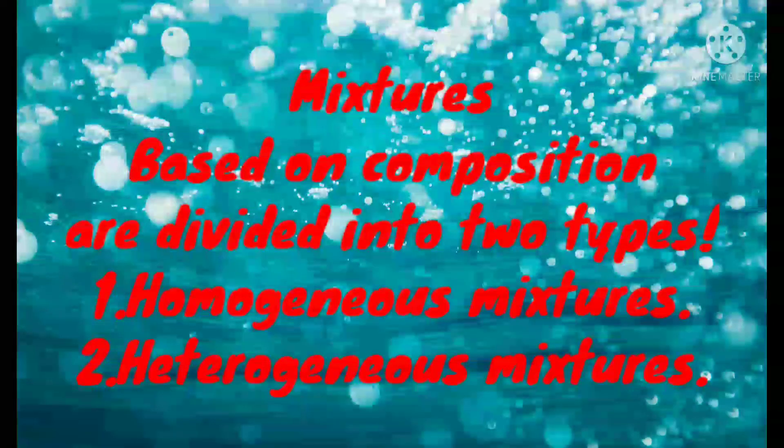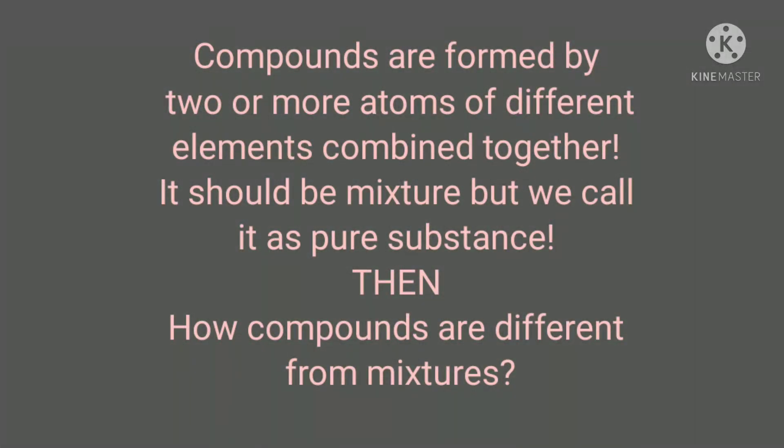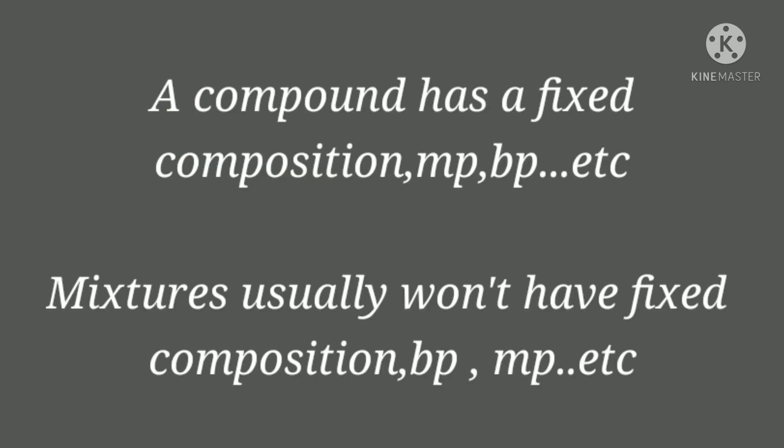Mixtures based on composition are further divided into two types: homogeneous and heterogeneous. But before going there, let us confirm why compounds are called pure substances, although they are made up of two or more atoms of different elements combined together. To answer this, we need to look at composition, melting point, and boiling point — compounds have fixed values, but mixtures usually do not.